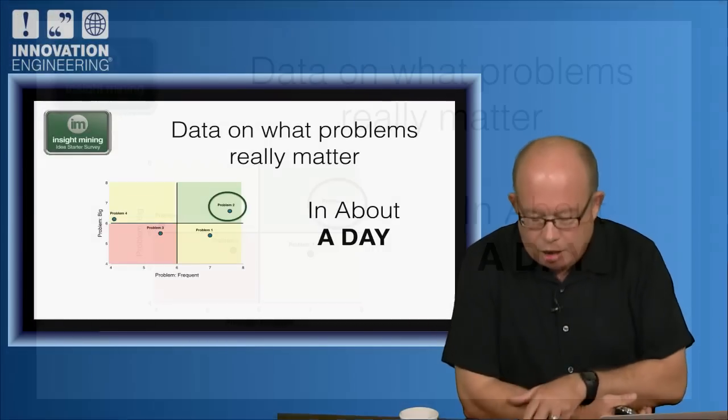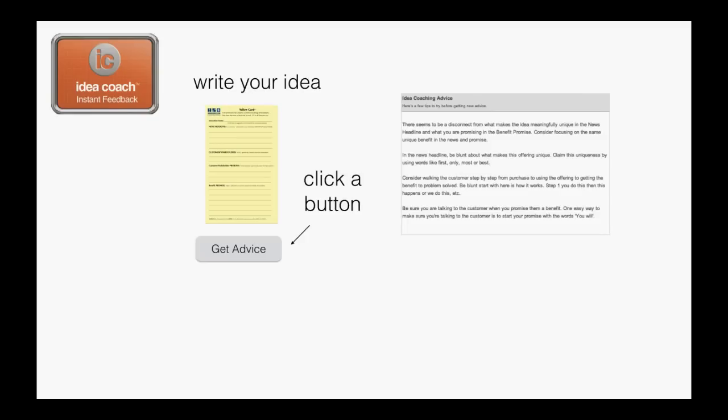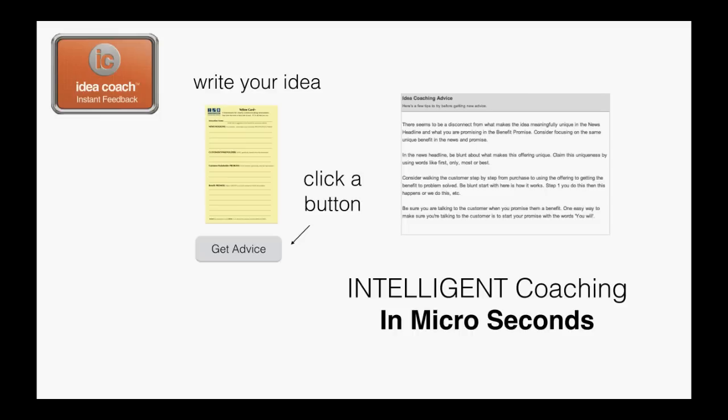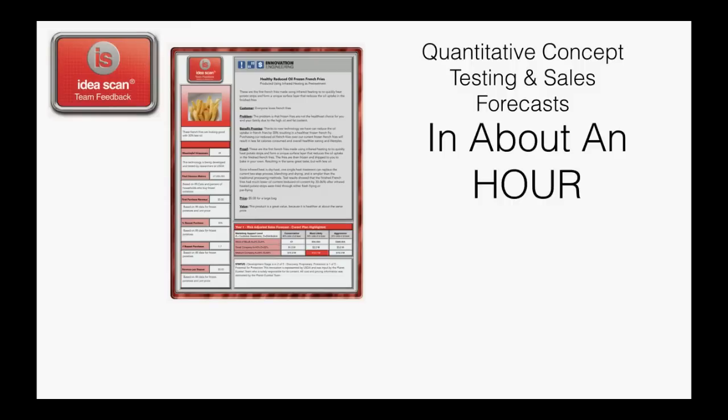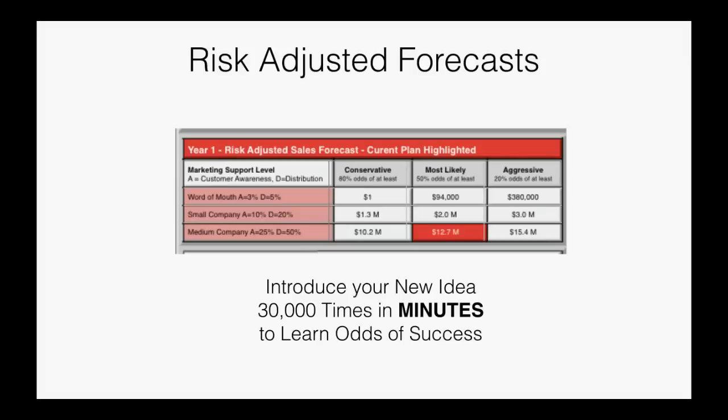You need data on the problems that really matter. In about a day, we can run these studies. You need data to help you improve your idea. We have an artificial intelligence engine that in microseconds gives you feedback so you can improve your concept, improving it some 40%. You need to do quantitative testing and sales forecasts in about an hour, investment grade in about two days. Running Monte Carlo simulations with risk-adjusted forecasts to introduce your new idea 30,000 times in minutes to learn the odds of success.